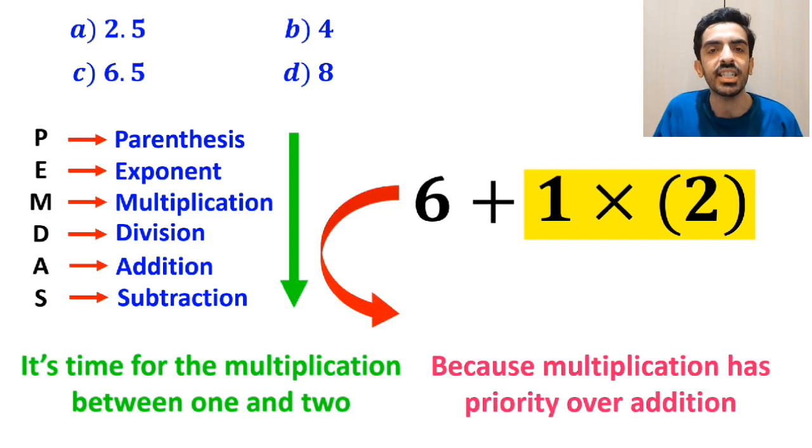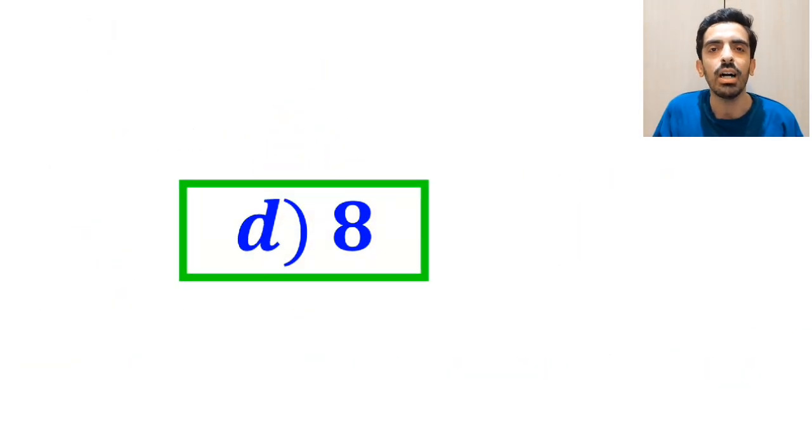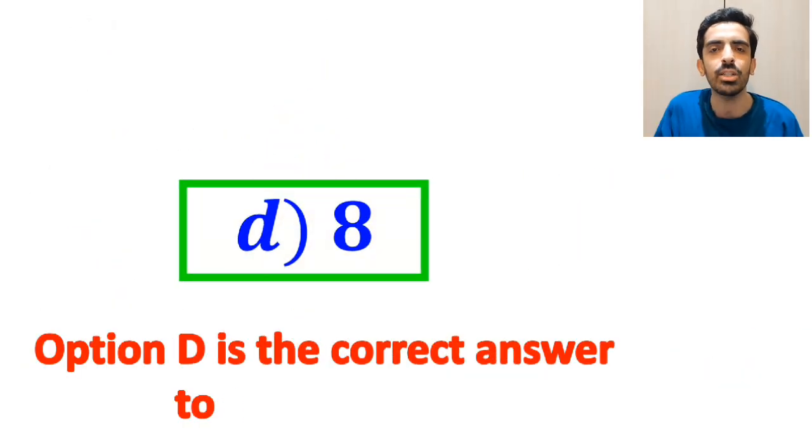So instead of this expression, we can write 6 plus 2, which ultimately gives us the answer 8. Therefore, option D is the correct answer to this question.